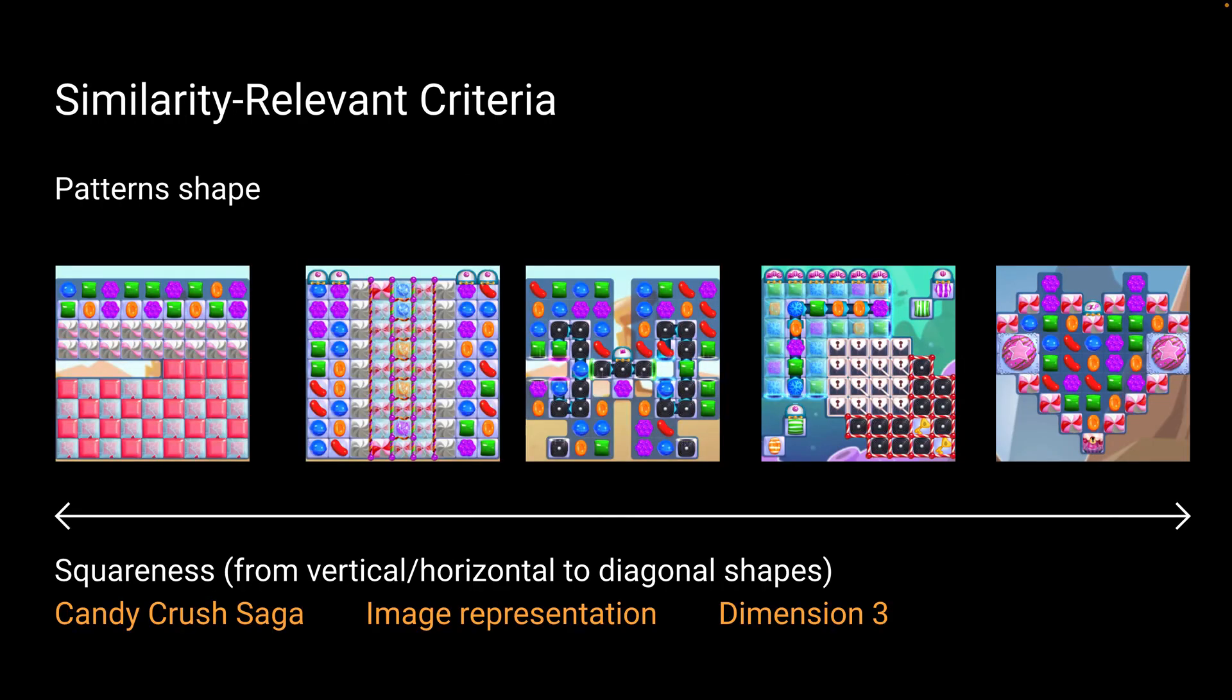Here are some of the results, the similarity-relevant criteria that the participants highlighted. First, pattern shape, where the squareness is of importance. So here we have an example of squareness, where on the left-hand side we have more vertical horizontal shapes, and as we go to the right-hand side, shapes become more diagonal or irregular.